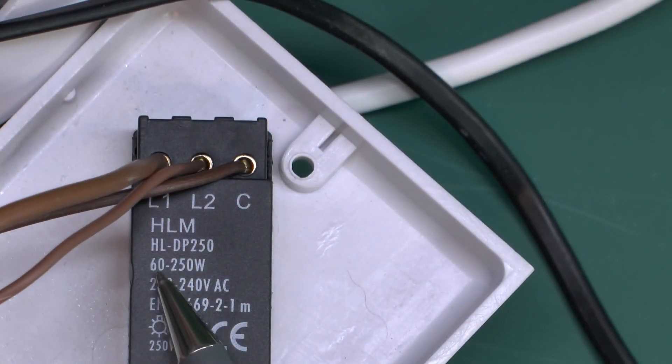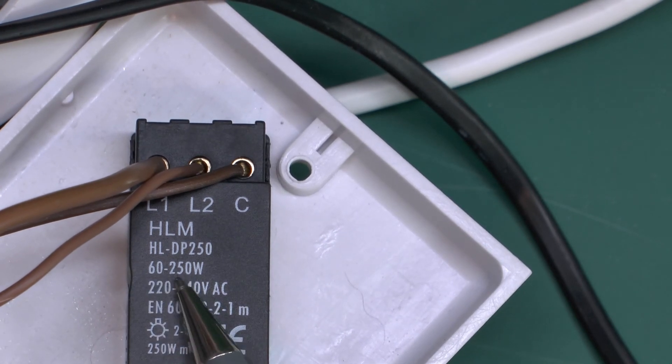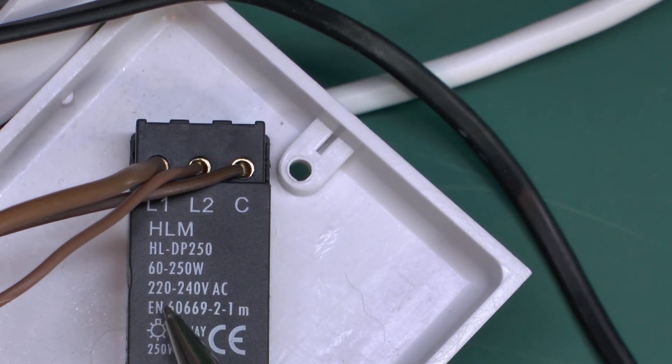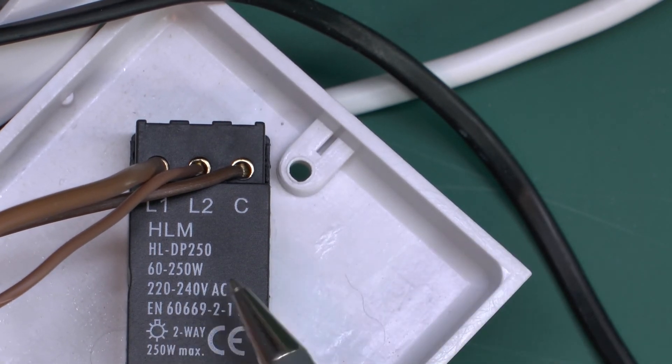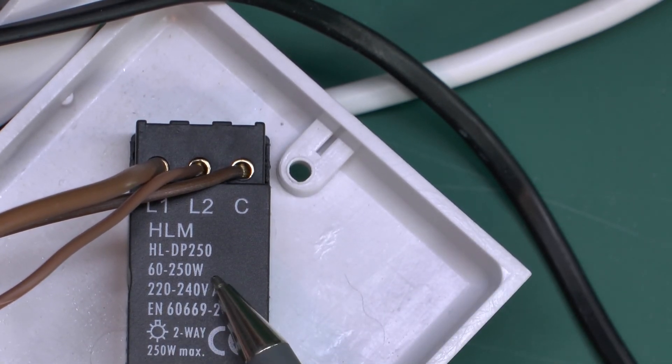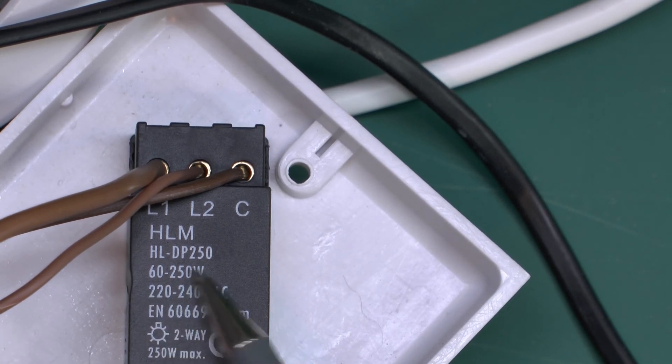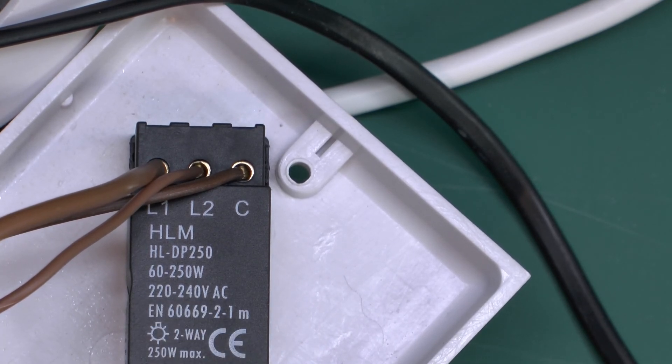They also have a minimum rating which in this case is 60, and if you use it below the minimum generally the dimming circuitry doesn't actually work properly. In this case they're going to be three 50 watt halogen lamps so that's about 150 so it's right in the middle of the operating range for this one.